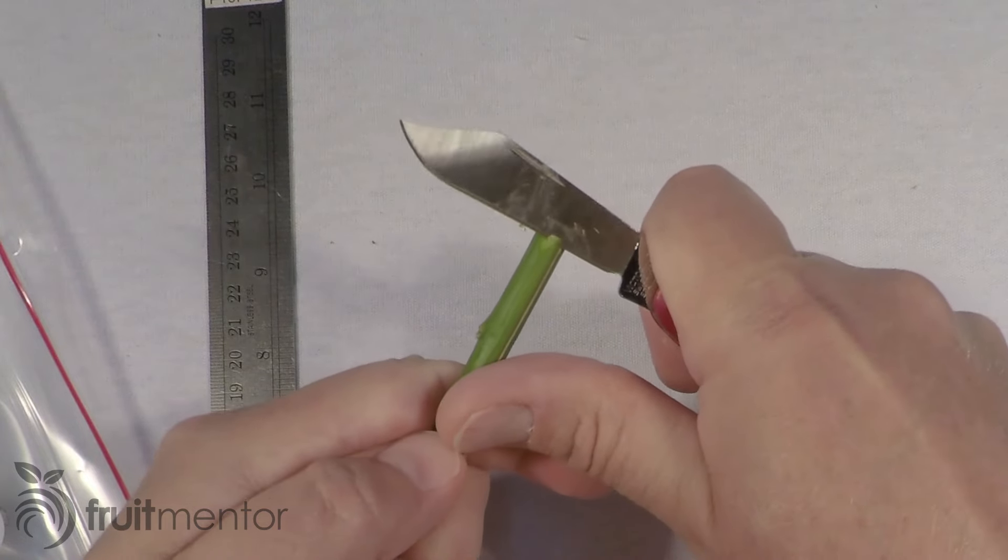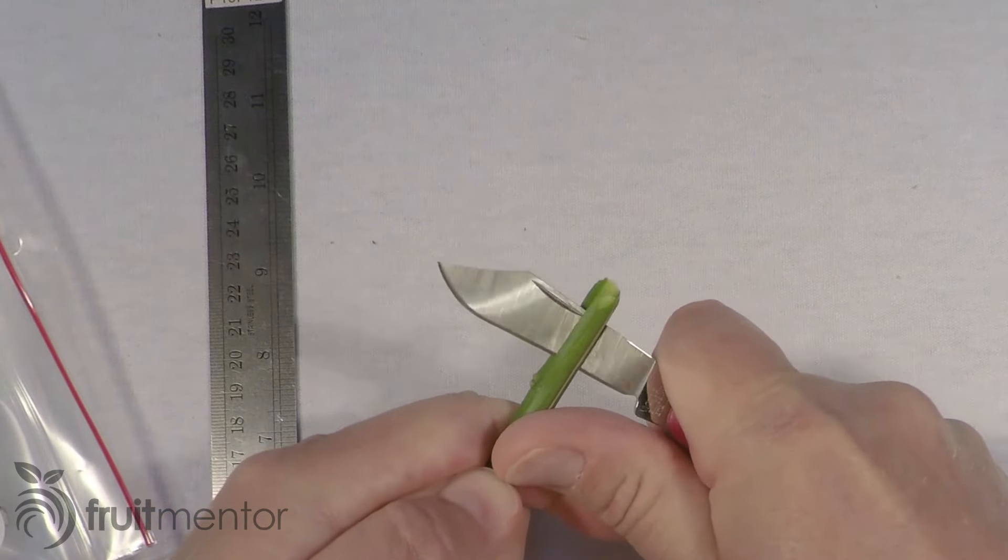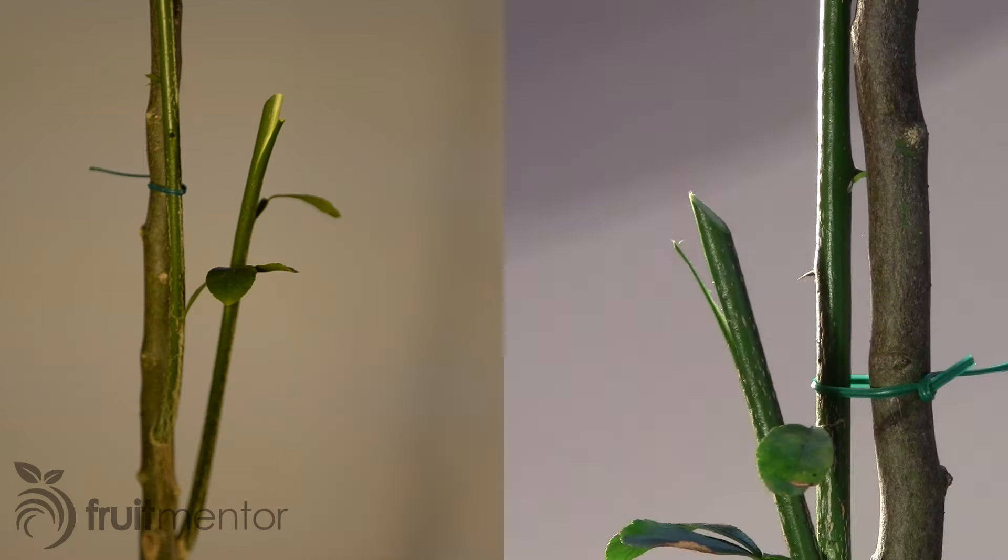My beginner's mistake with this grafting technique was to cut the strip too wide. It would work better if it were not wider than the diameter of the rootstock. Later in the video I will show the consequences of making it too wide.